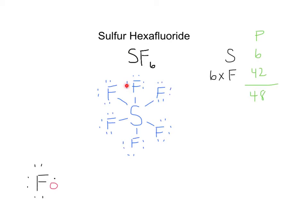Sulfur hexafluoride is an exception to the octet rule, and this is the structure. Hope that was helpful. When you get to other problems, there can be a situation where if you count up all your electrons you still have some left over. The rule to remember is that any additional leftover valence electrons in your Lewis dot structure — those lone pairs should go on the central atom. So if I did have an extra pair of electrons, I would put it on sulfur as a lone pair. Hope this was helpful — have a great night.